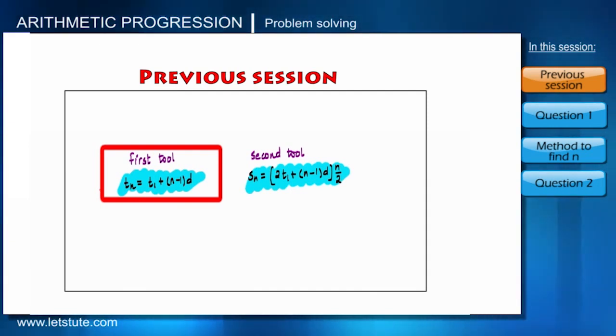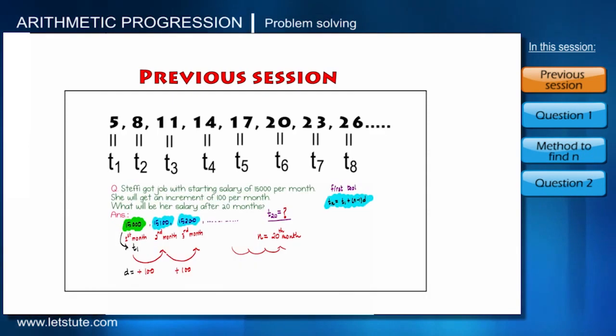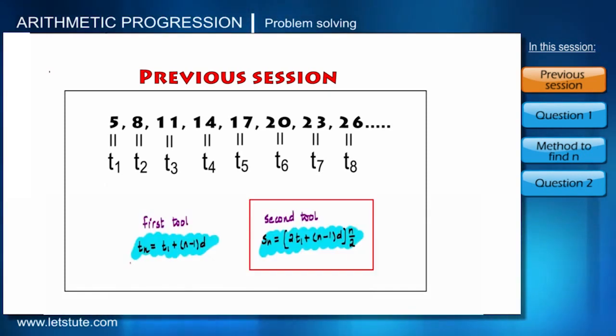In all the cases it was talking about value of term at some specified place, like salary in some particular month. We need first term T1 and the common difference D. Our first formula deals with these parameters only.